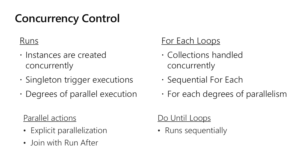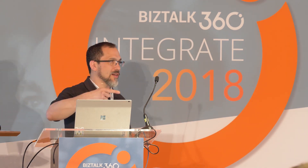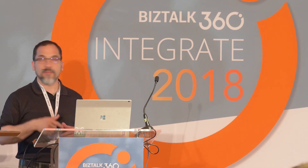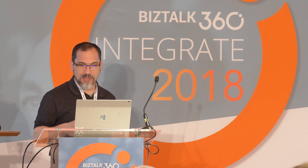Do-until loops run sequentially by the nature of their intent — do something until some state is true. If you did it in parallel you wouldn't know what state you're in, so it's a sequential loop that iterates each time across the collection of actions in that do-until loop.